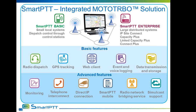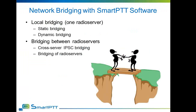Let's talk more about bridging functionality. Bridging in radio networks is the ability to connect networks and subscribers which are not connectable by other means — for example, to allow IP Site Connect subscribers to make calls into a Capacity Plus network, or allow analog subscribers to talk freely with digital subscribers in a MotoTURBO network. SmartPTT software has flexible and powerful bridging ability. It can be divided into two main parts: local bridging within a radio server, and bridging between different radio servers.